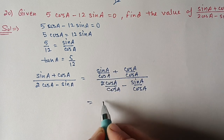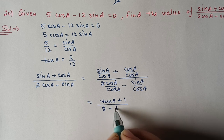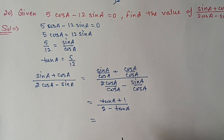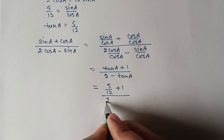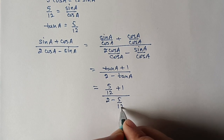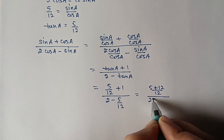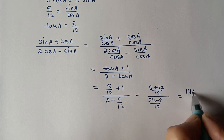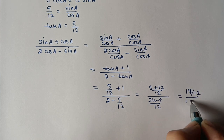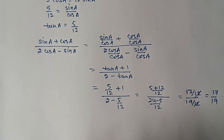It will become (tanA + 1) / (2 - tanA). Substituting tanA = 5/12: (5/12 + 1) / (2 - 5/12) = (17/12) / (19/12). The 12s cancel, so the answer is 17/19.